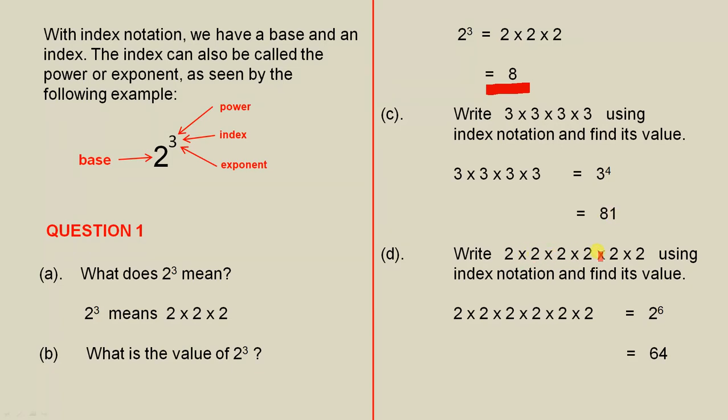So write this using index notation and find its value. So we have these 2s here. How many are there? There are 6 of them, multiplied together, so that's 2 to the power of 6. If you multiply that together systematically, you'll get 64. So 2 to the power of 6 equals 64.